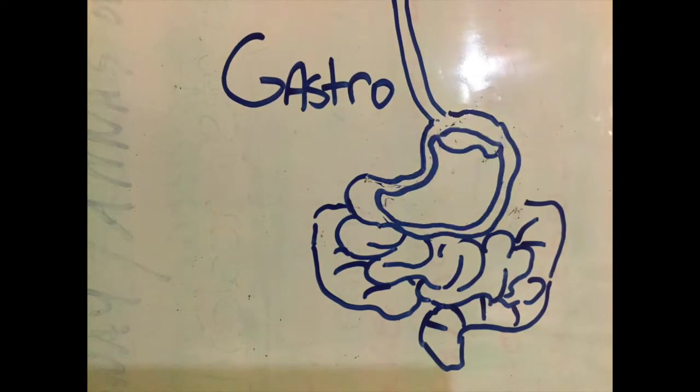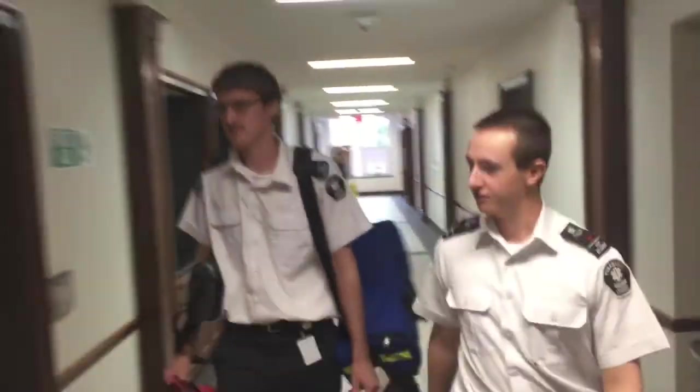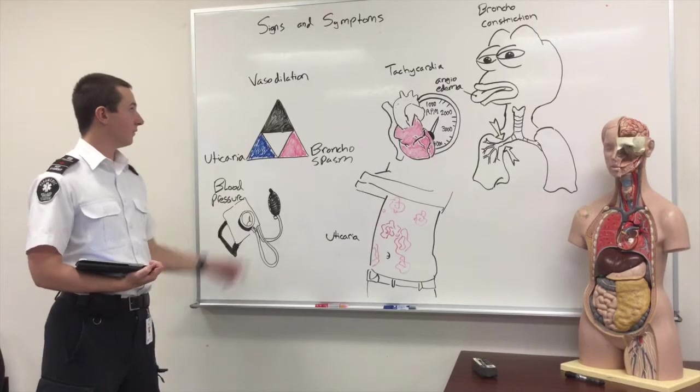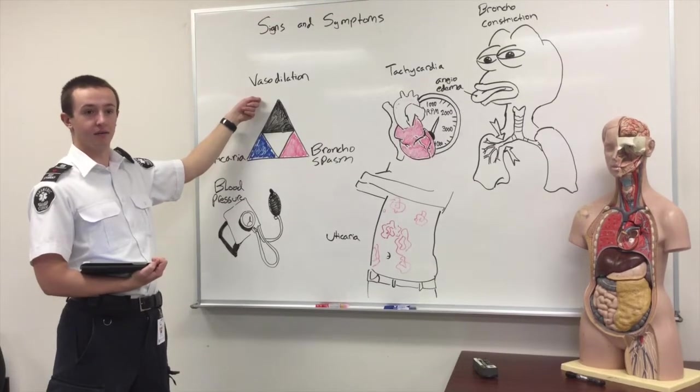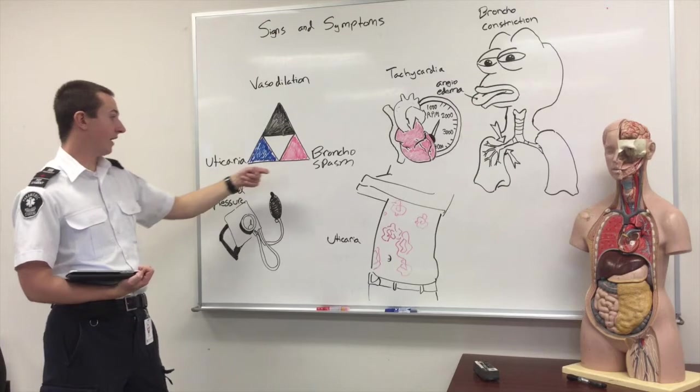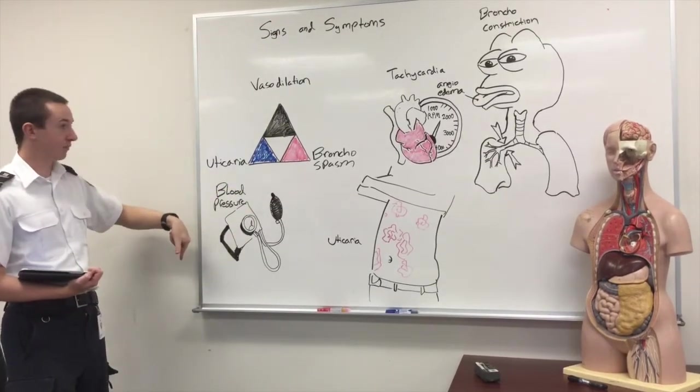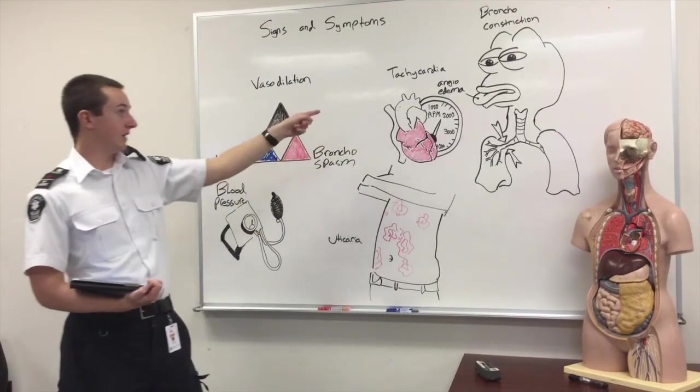Here we have vasodilation of the smooth muscles in the vasculature, urticaria, and bronchospasm. We also have a drop in blood pressure, bronchoconstriction, and tachycardia.